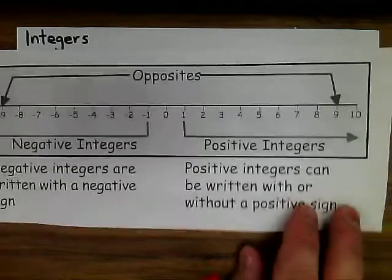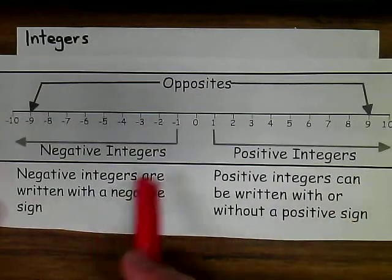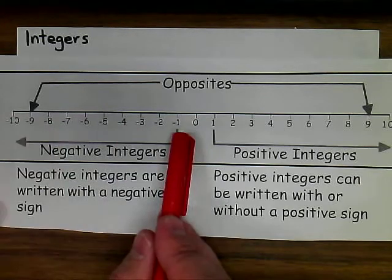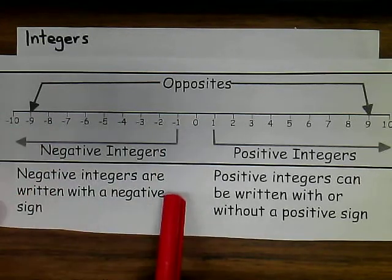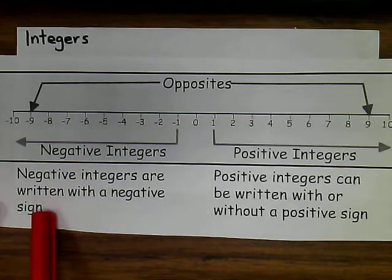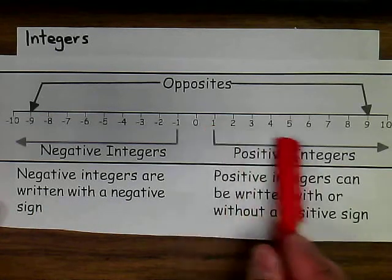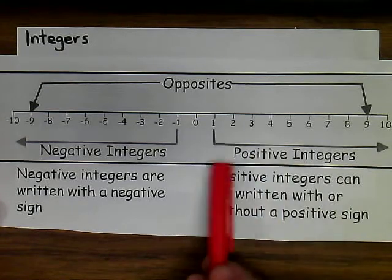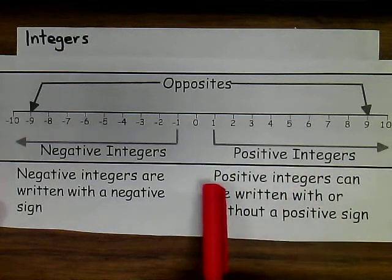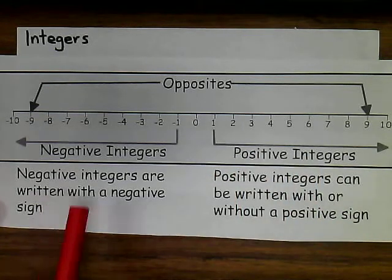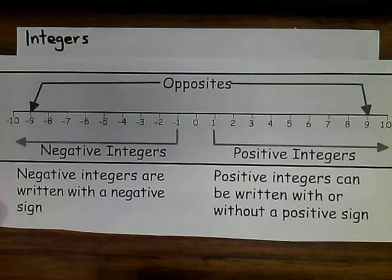There are three types of integers. You have your negative integers, which are numbers preceded by a negative sign. You have positive integers, which are the standard numbers you normally are used to working with. They're whole numbers, but positive integers can be written with or without a positive sign. If you think about when you were younger and you were adding numbers, your teacher wasn't saying positive two plus positive three equals positive five. It was just two plus three is five.